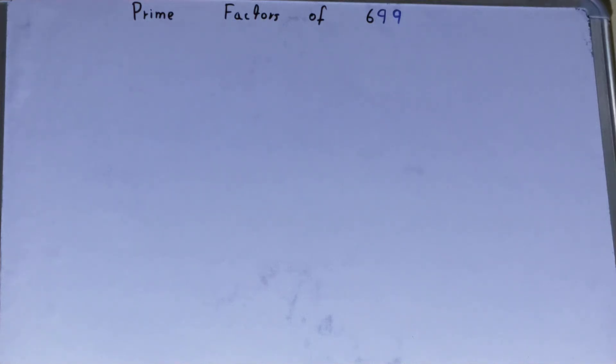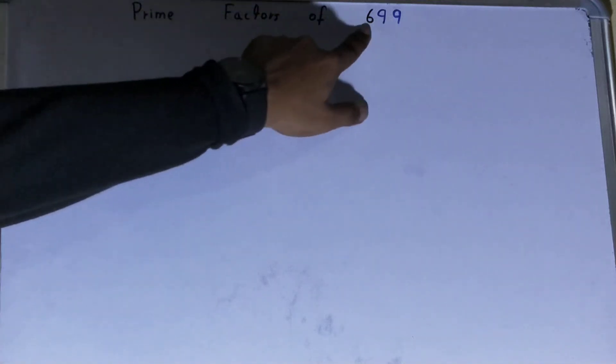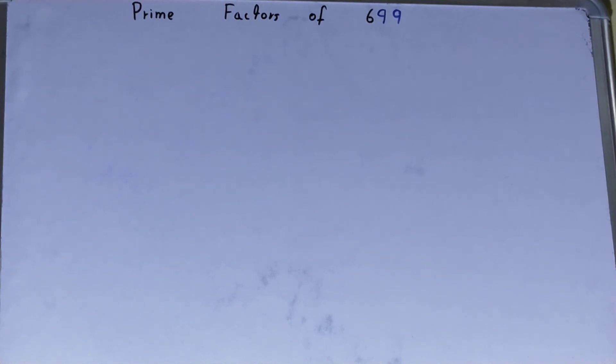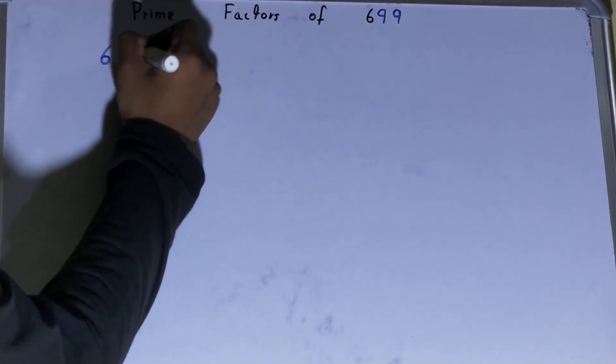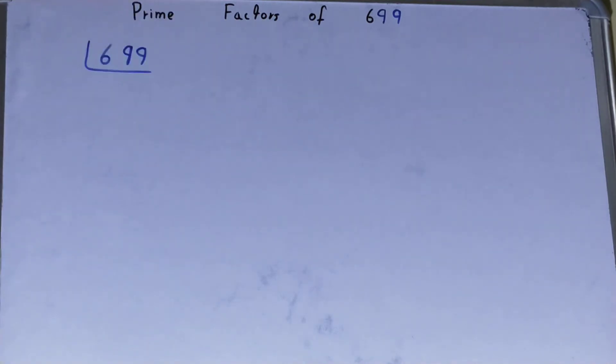Hello friends, in this video I'll be helping you with the prime factors of the number 699. Let's start. To find out the prime factors of 699, you need to write the number like this. Before solving this any further, you must know what prime numbers are.